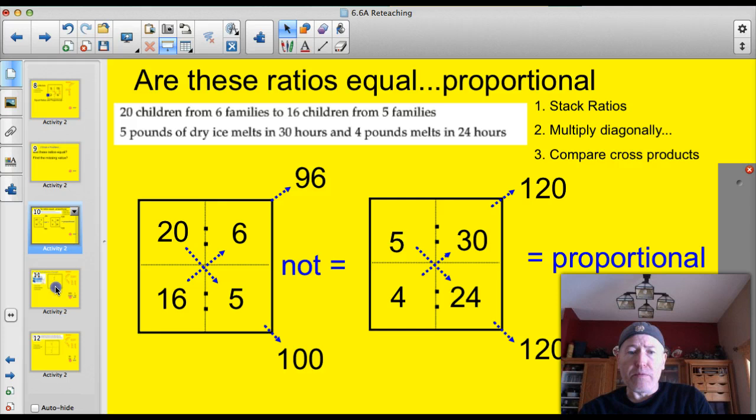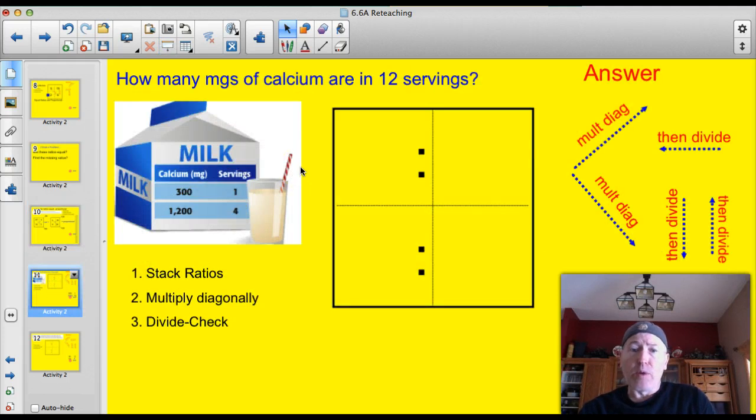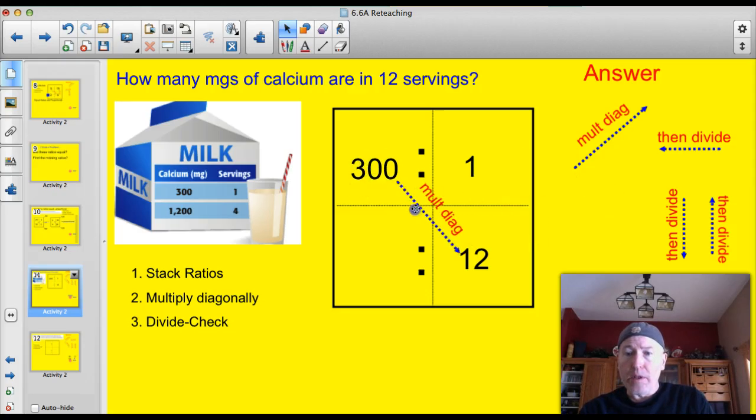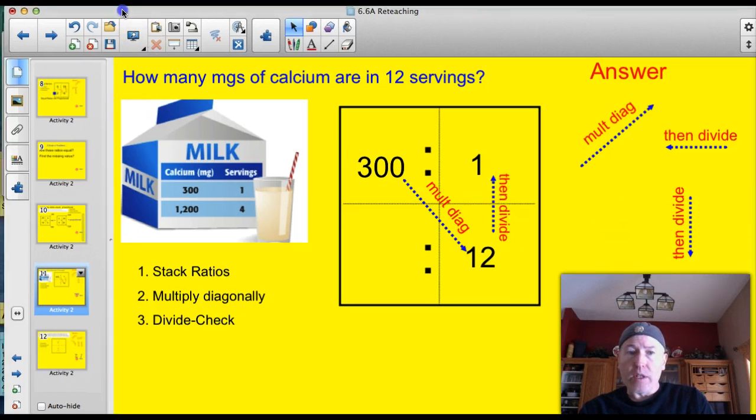The other type of problems would be finding the missing number problems. And here's an example of one of those. How many milligrams of calcium are in 12 servings? And this is a real world problem because you've got it for one serving and for four servings. So, what are you going to do here? I'd use the one. So, let's just pop the numbers in. We know that it's 300 mg's in one serving. And we want to know how much is in 12 servings.